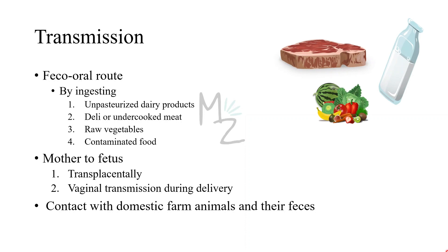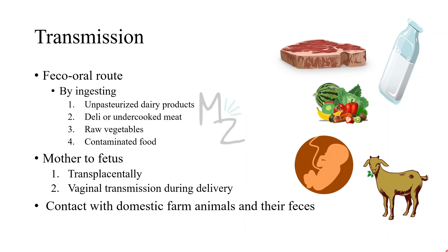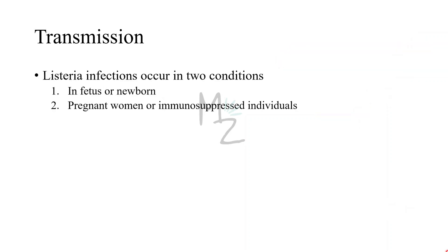It can also be transmitted from mother to fetus or baby, because the only passage of nutrition between mother and fetus is the placenta. So if the mother is infected, the infection will be transmitted to the fetus. It can also be transmitted via vaginal transmission during delivery — when the baby passes through the birth canal. Contact with domestic farm animals and their feces is another route. Listeria infection occurs primarily in the fetus or newborn due to transplacental or birth canal transmission, and in pregnant women and immunosuppressed adults — especially renal transplant patients. Pregnant women get infected in their third trimester due to reduced cell-mediated immunity.